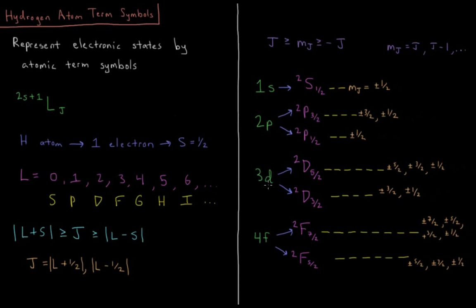For something in a d orbital, that's a doublet d, j can either be 5 halves, 2 plus 1 half, or 3 halves, 2 minus 1 half. Ten possible values of m sub j between the two states here, 6 for 5 halves, and 4 for 3 halves.